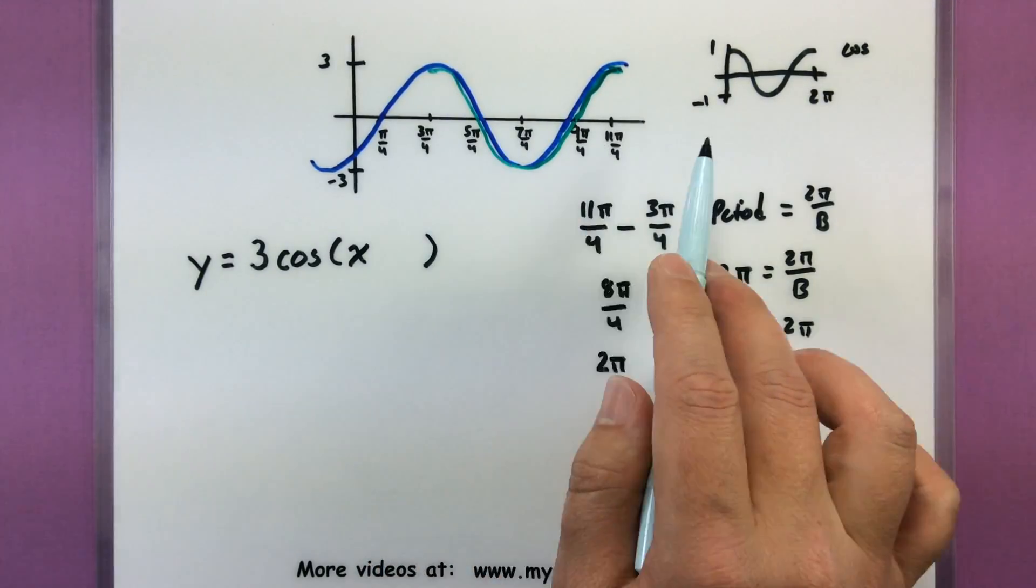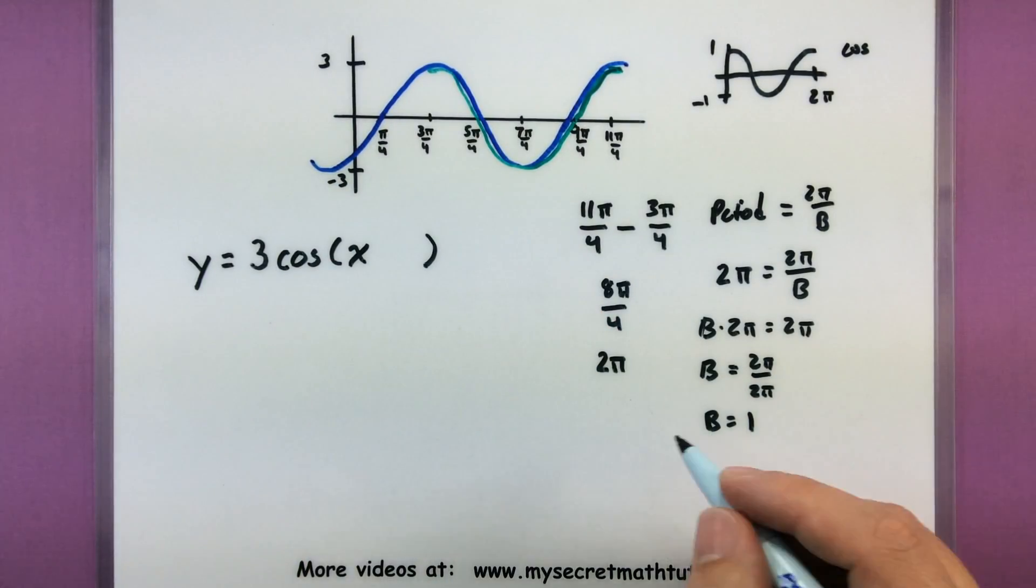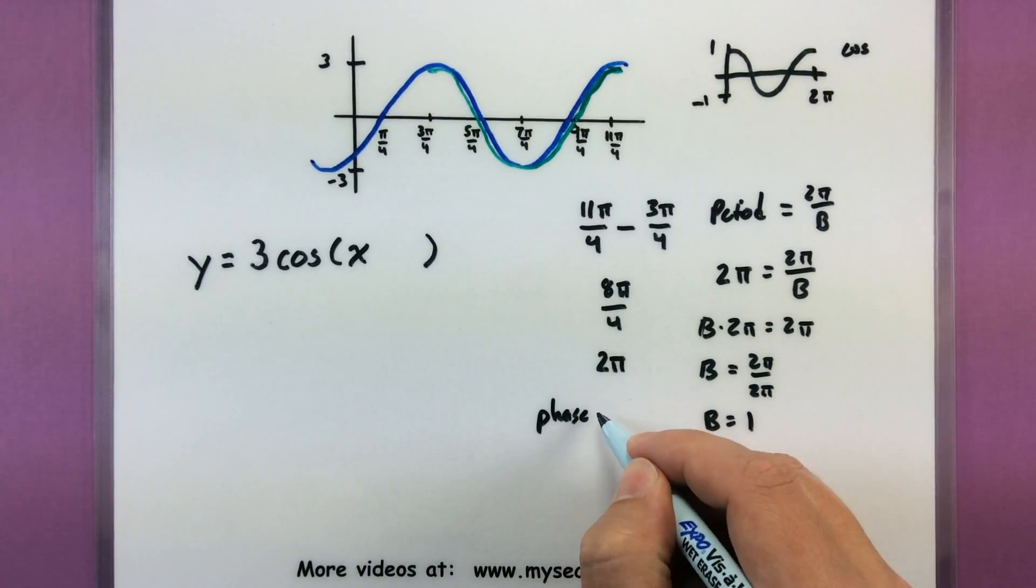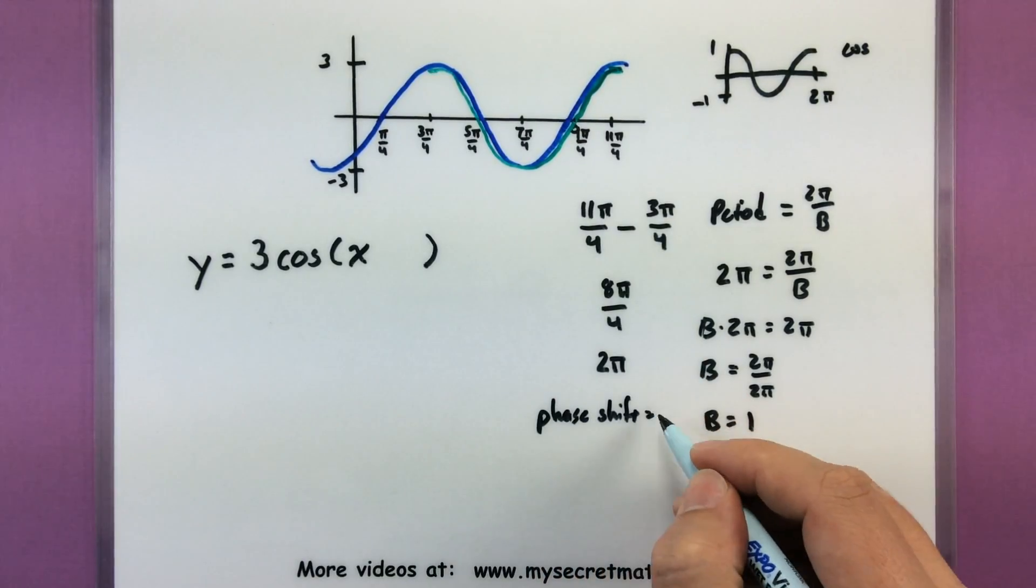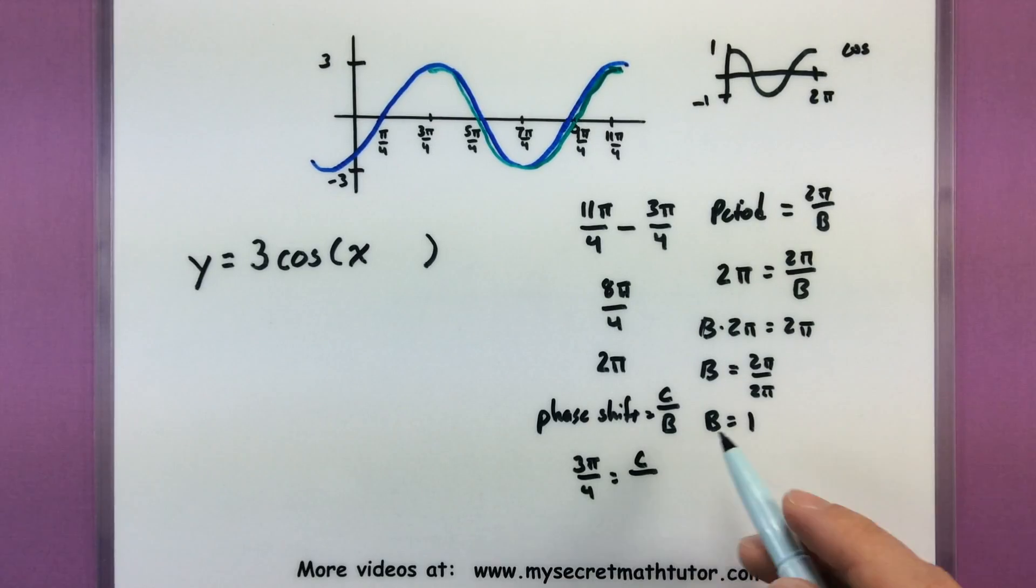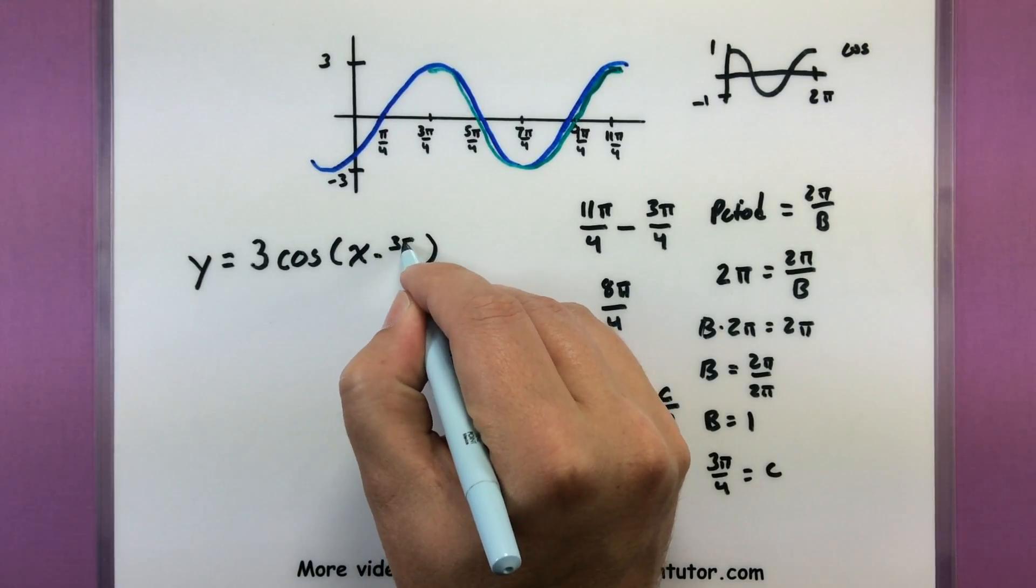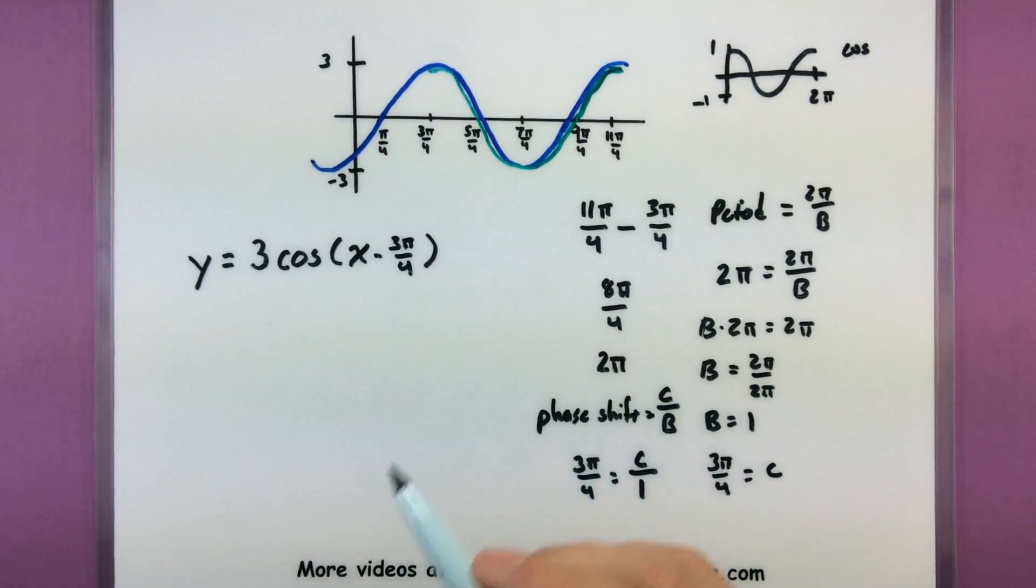Okay, on to the phase shift. So it has been moved over to the right. It doesn't start here at 0. It's been moved to the right at 3 pi over 4. So phase shift. This would equal the value of C divided by B. So our phase shift is at 3 pi over 4. We found the value of B earlier. It was 1. So if we solve this, now we simply get that C is equal to 3 pi over 4. So minus 3 pi over 4. Done. And now we have our equation that works perfectly good to represent the graph we are given.